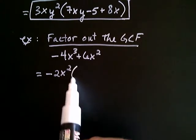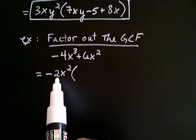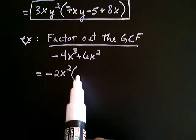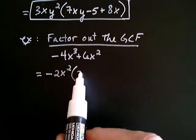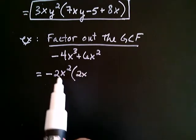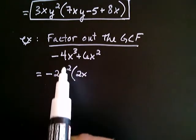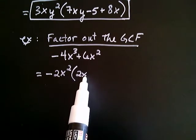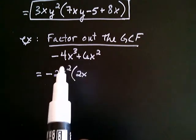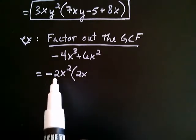Okay, so, upon distribution, what do I get? Well, this times what will give me that? Do you see why it has to be a positive two x? Well, a negative two times a positive two will give me negative four. And, x squared times x will give me x cubed. Okay, now the fun part of this problem.